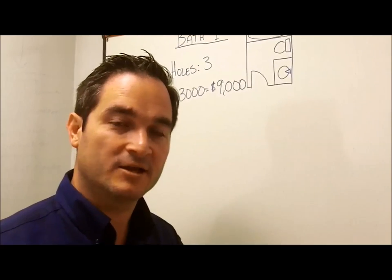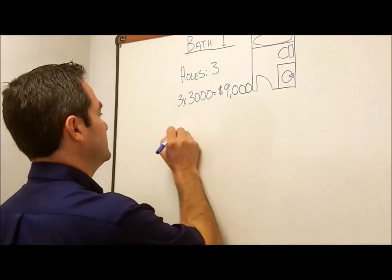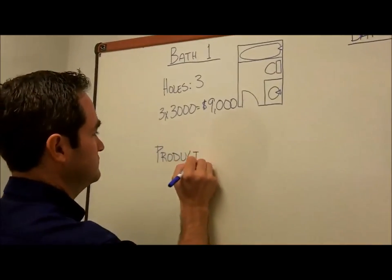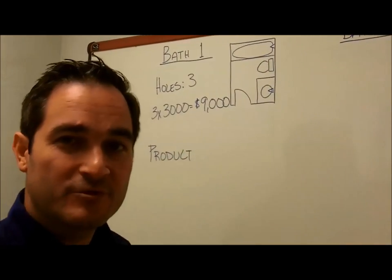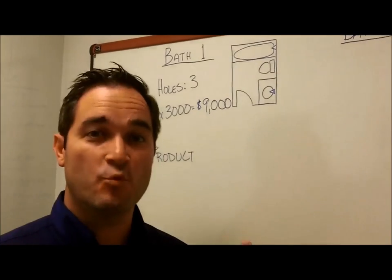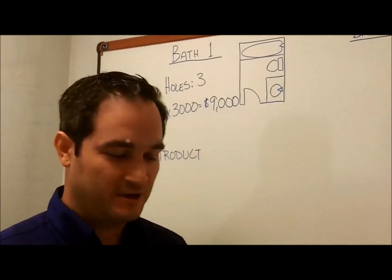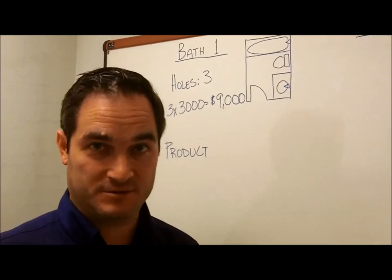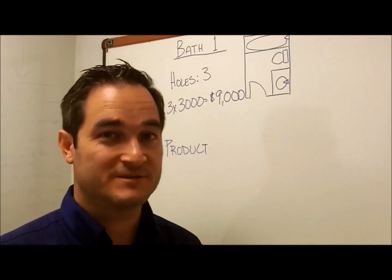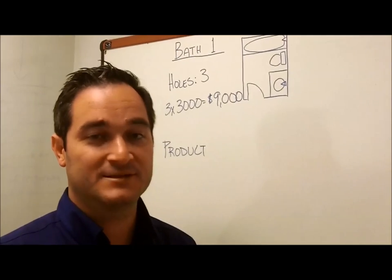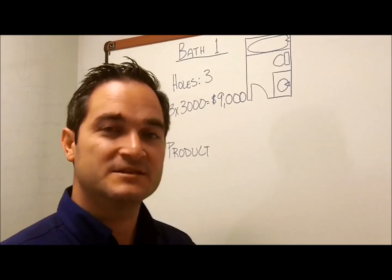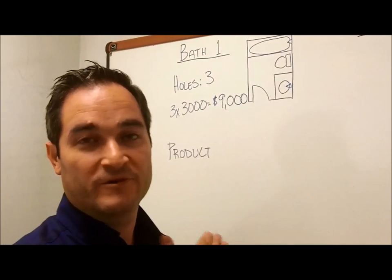But you remember there's a second element: the second element is product. Especially in a bathroom, you can spend as much as you want on anything you want. You can have tile for a dollar a square foot, you can have tile for $30 a square foot. You can get a faucet for $6 per fixture, you can get one for $600 per fixture. That's a huge spread.